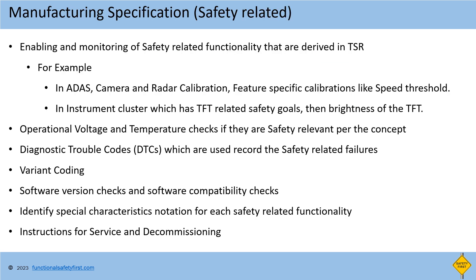The first activity is manufacturing specification. This contains requirements to be followed during production including functional safety. We will take some examples related to functional safety that can be considered in the manufacturing specification. Enabling and monitoring of safety related functionality derived in TSR are to be added. For example, in ADAS, camera and radar calibration and feature-specific configurations like speed threshold will impact safety related functionality and performance. The manufacturing specification needs to identify the method for calibration, measures to verify the correctness of the calibration data, and mitigation actions in case of failure detected in the calibration.